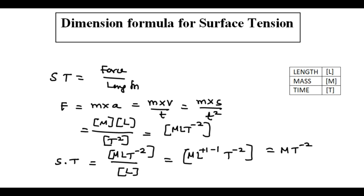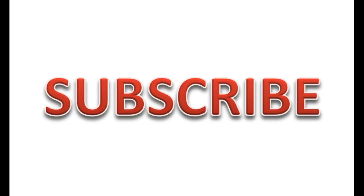That can be written as M T power minus 2. So this is the dimension formula for the physical quantity surface tension.